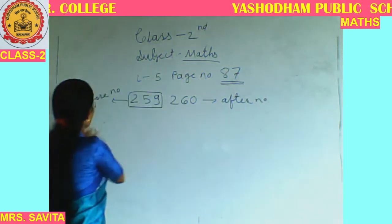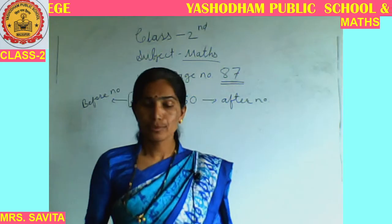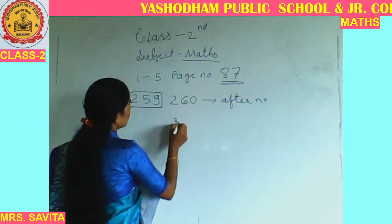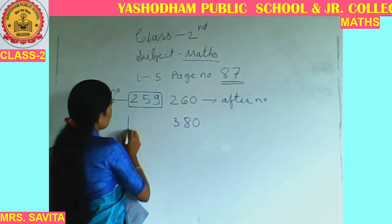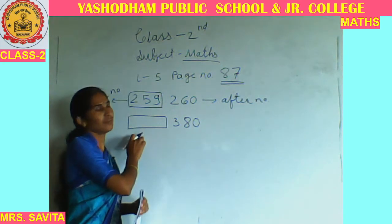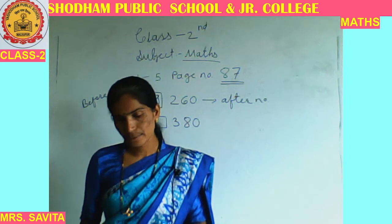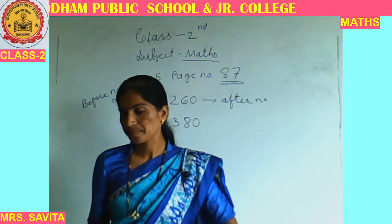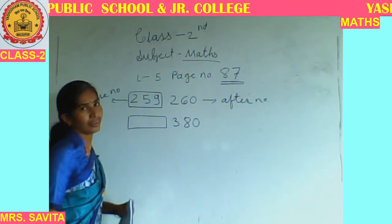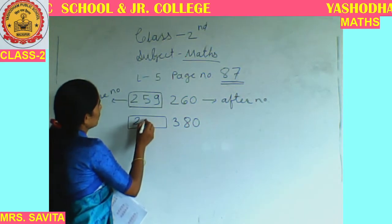We are going to solve some more problems. First of all we are going to see the before number — before means the number that comes earlier. The given number is 380. So you have to find the before number of 380. Which number comes before 380? Think about it — which number will come? 279.